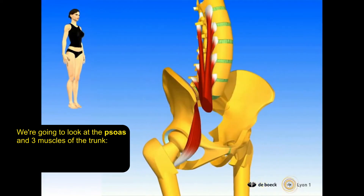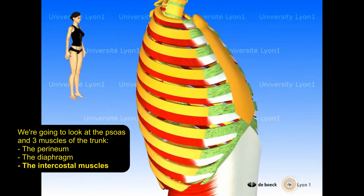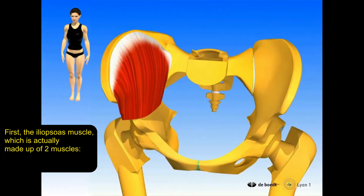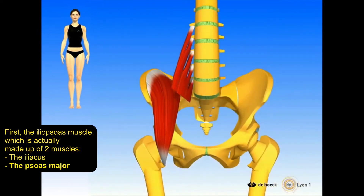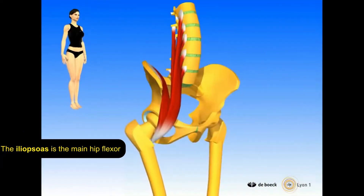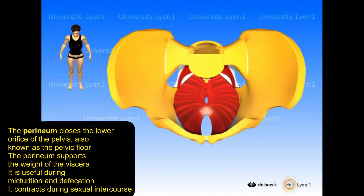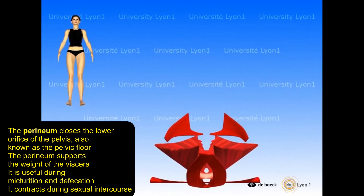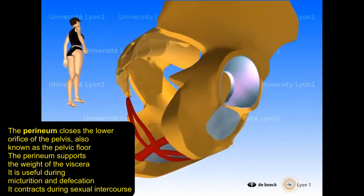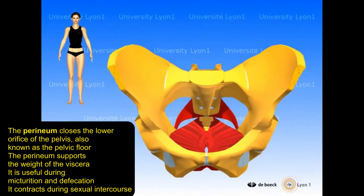Psoas and trunk muscles. We'll look at the iliopsoas muscle, which is actually made up of two muscles: the iliacus and the psoas major. The iliopsoas is the main hip flexor. The perineum closes the lower orifice of the pelvis, also known as the pelvic floor. It supports the weight of the viscera, is useful during micturition and defecation, and contracts during sexual intercourse.